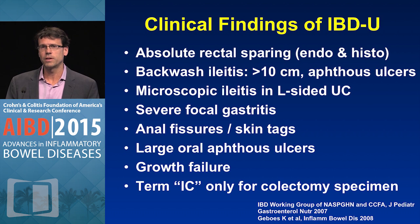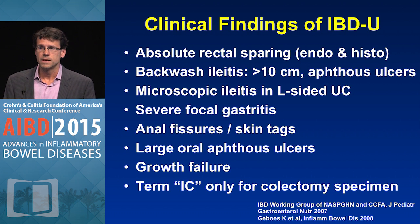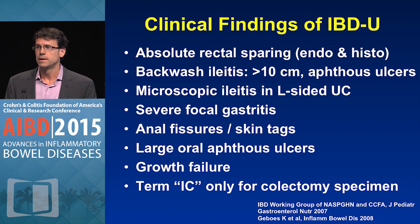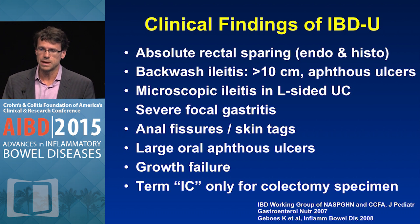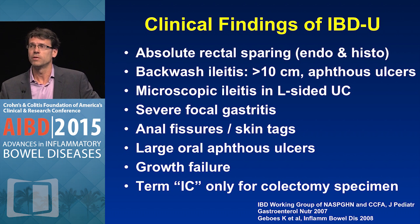Taking all of these things into account can help you confirm or change your original diagnosis. When we talk about IBD unclassified (IBD-U), it's defined as having one or more of specific features, based on the IBD working groups from NASPGHAN, CCFA, and IOIBD. These features include: absolute rectal sparing in an adult without PSC and without fulminant colitis; backwash ileitis of more than 10 centimeters or aphthous ulcers in the ileum; microscopic ileitis in left-sided UC; severe focal gastritis; anal fissures or skin tags; large oral aphthous ulcers; or growth failure. The term indeterminate colitis should really be restricted to colectomy specimens, where it was first coined. Over time, this term has grown into a large wastebasket of various definitions used by GI physicians and pathologists, and has become essentially a useless term.